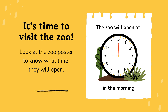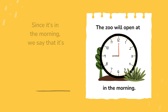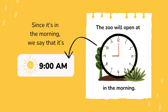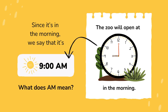It's time to visit the zoo. Look at the zoo poster to know what time they will open. What time does it say? Since it's in the morning, we say that it's 9 AM. What does AM mean?